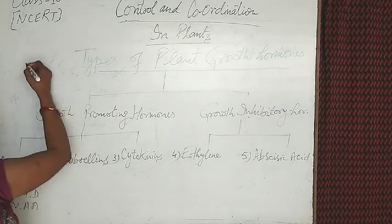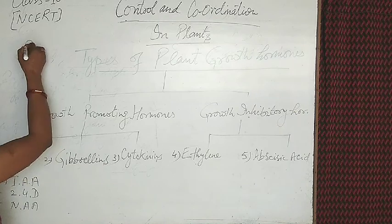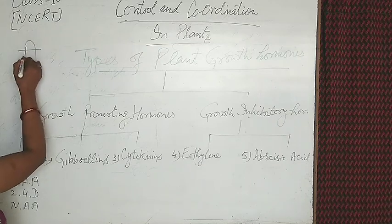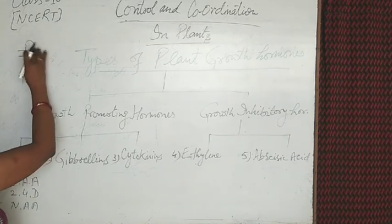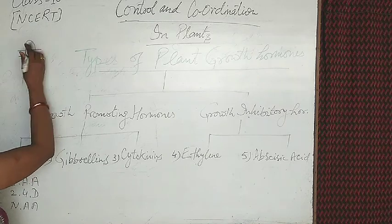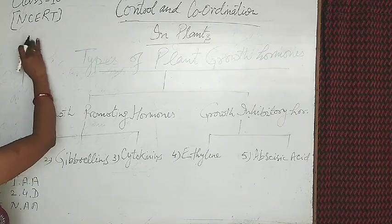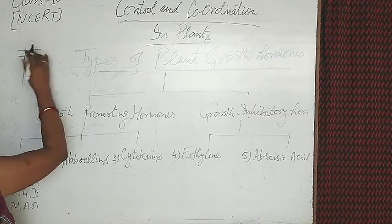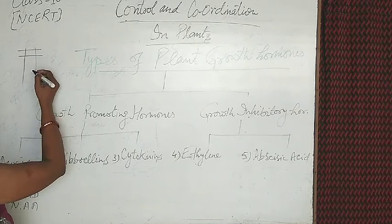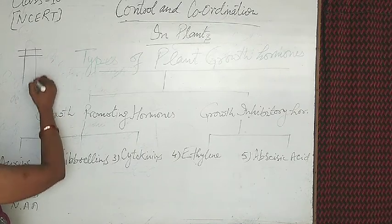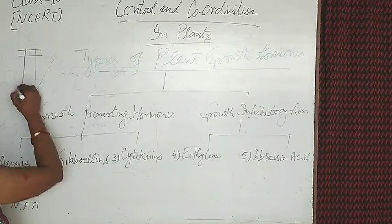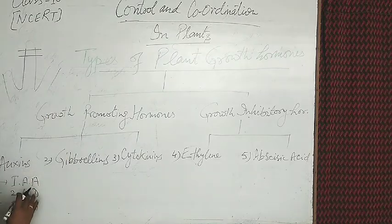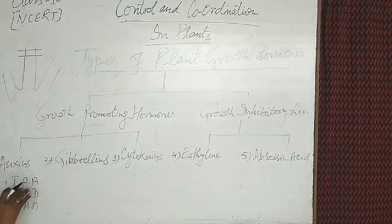In plants, it shows the Avena curvature test. The anterior part of the Avena plant — the apex region — is cut, and a mica sheet is inserted vertically into the cut anterior part. After some time, the growth of the plant occurs on the lateral side. This effect is mostly used in the formation of hedges.